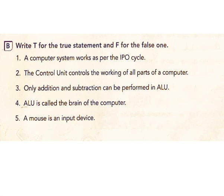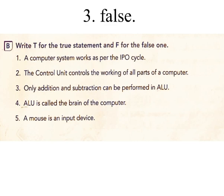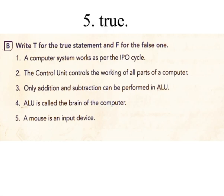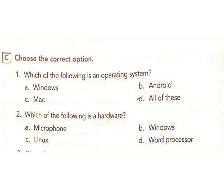B. Write T for the true statement and F for the false one. 1. A computer system works as per the IPO cycle. Answer: True. 2. The control unit controls the working of all parts of a computer. Answer: True. 3. Only addition and subtraction can be performed in the ALU. Answer: False. 4. ALU is called the brain of the computer. Answer: False. 5. A mouse is an input device. Answer: True.